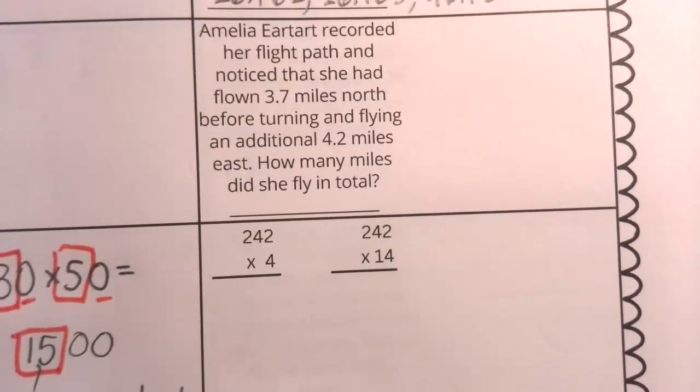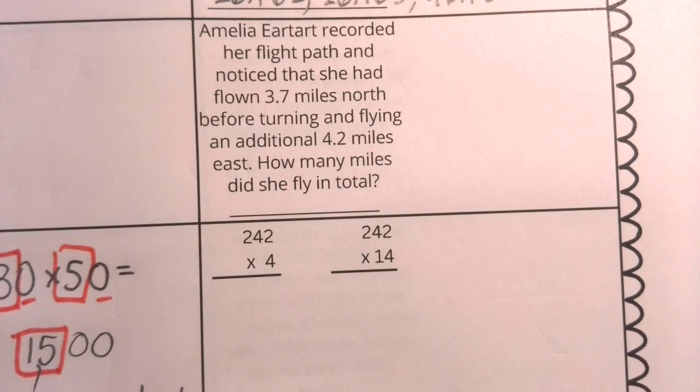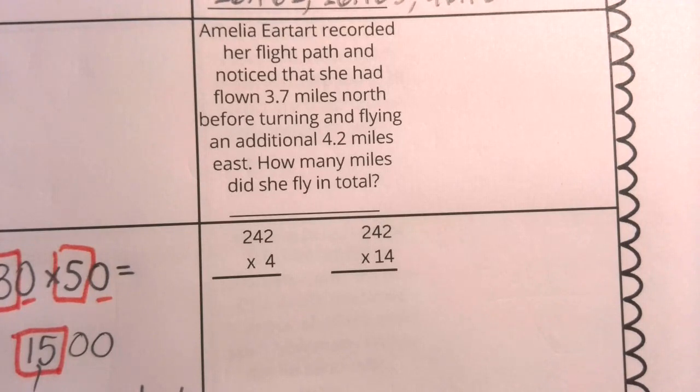Let's take a look here at Amelia Earhart. Amelia Earhart recorded her flight path and noticed that she had flown three and seven tenths miles north before turning and flying an additional four and two tenths miles east. How many miles did she fly in total?